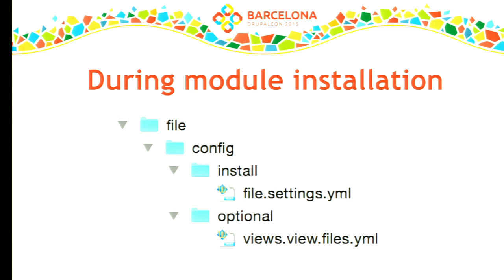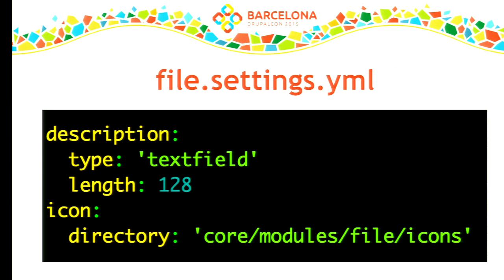What goes in these files — I'll show you the file.settings file because a view is really complicated. This is a very simple configuration file that basically says the file description will be a text field allowing 128 characters, and it configures where the icon directory is.